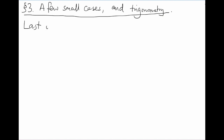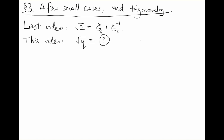Last video, we found a clever decomposition of root two into roots of unity: zeta₈ plus zeta₈ inverse. Since these zetas were eighth roots of unity, I'm going to decorate them with subscript eights. As this decomposition played such a crucial role in the argument, for the rest of this video we'd like to see whether we can find a similar decomposition for root q for other prime numbers q.